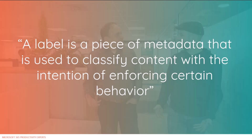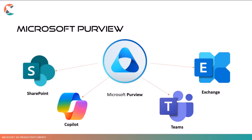Labels, in my eyes, are pieces of metadata used to classify content with the intention of enforcing certain behaviors. A lot of people know sensitivity labels, but retention labels are also very important. Both are part of the Microsoft Purview offering, which is the big tool used to apply security and compliance behavior across your entire Microsoft 365 tenant — to files in SharePoint, OneDrive, Copilot chats, Teams, Exchange, and more.